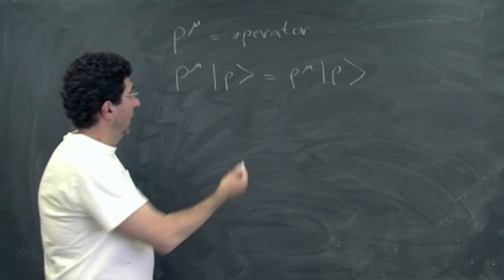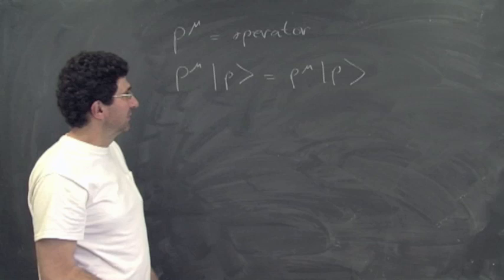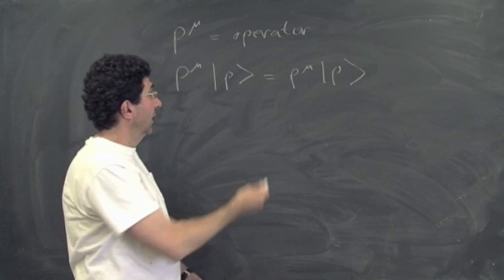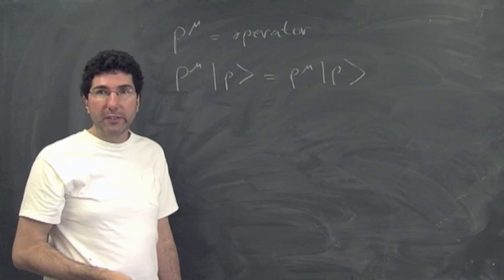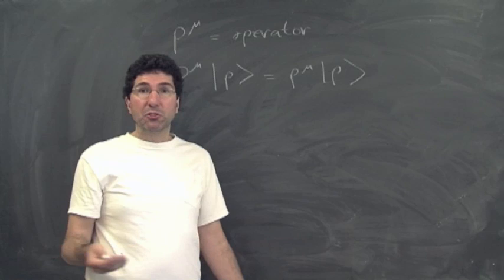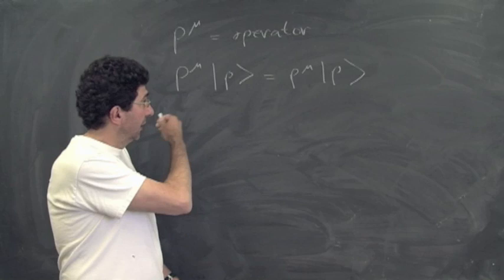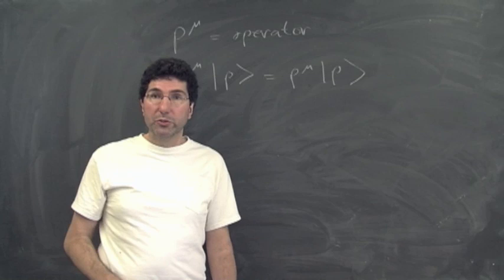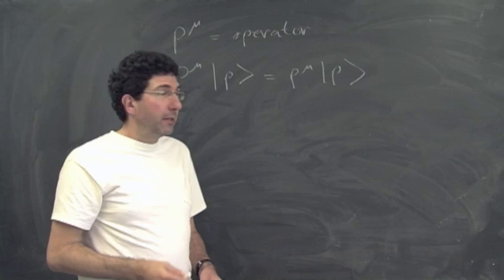This is a somewhat abstract definition of the theory — in one of the homework assignments, you will rewrite this theory in the more conventional language of wave functions and Schrödinger equations. Now that we have this operator P^mu and the states, let's talk about how Lorentz transformations actually act. Do they act on states? Do they act on operators? The answer is that they can act on either states or operators, but not on both.